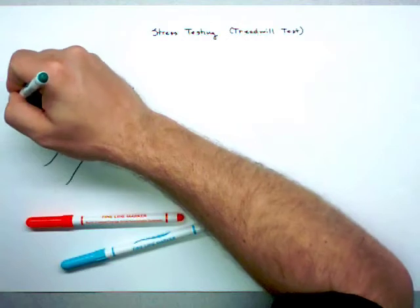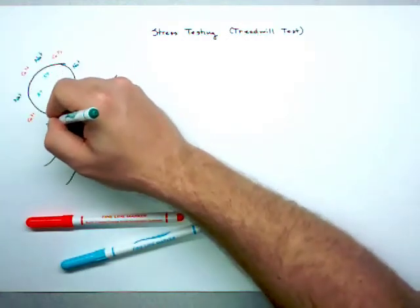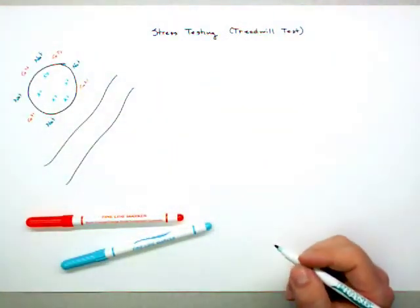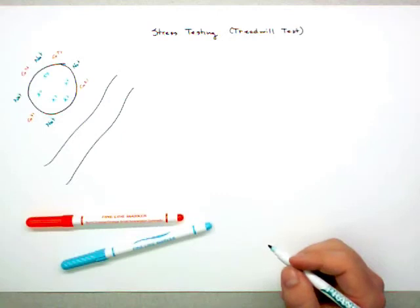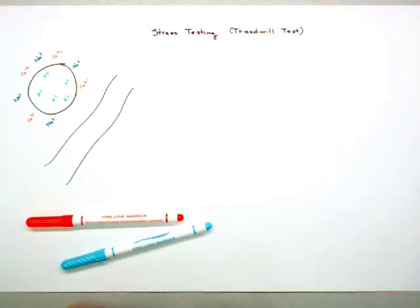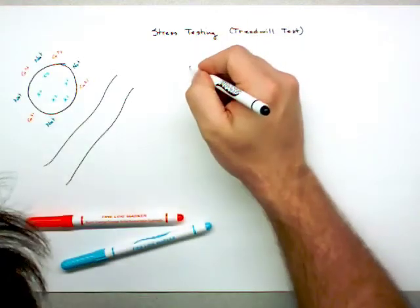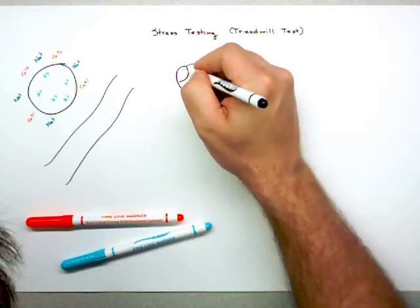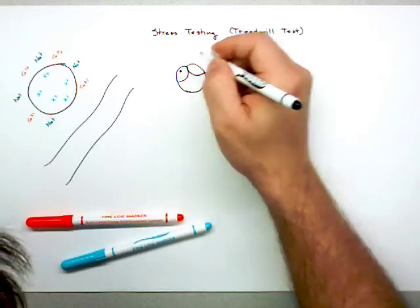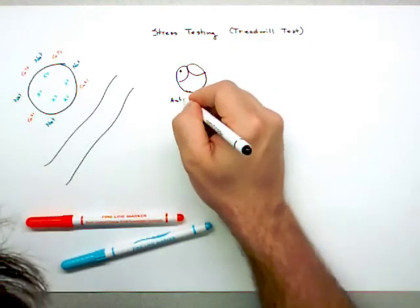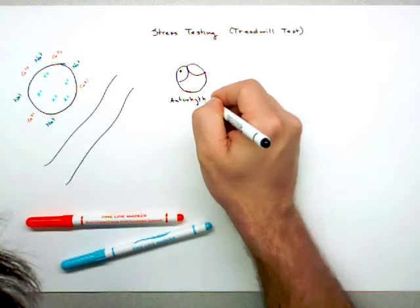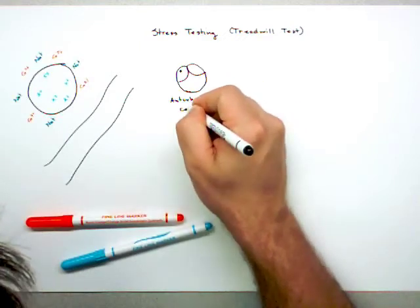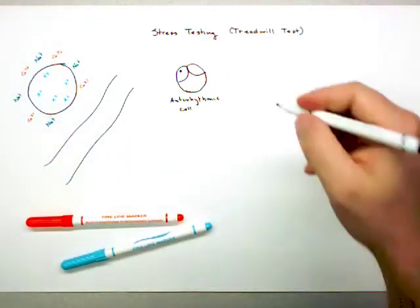And if you haven't watched my video on action potentials, or if you don't remember action potentials in a while, you might want to jump back to that first, because I'm just going to go ahead and draw two types of action potentials that occur in the heart. One of them occurs right here in what's called the auto-rhythmic cell.